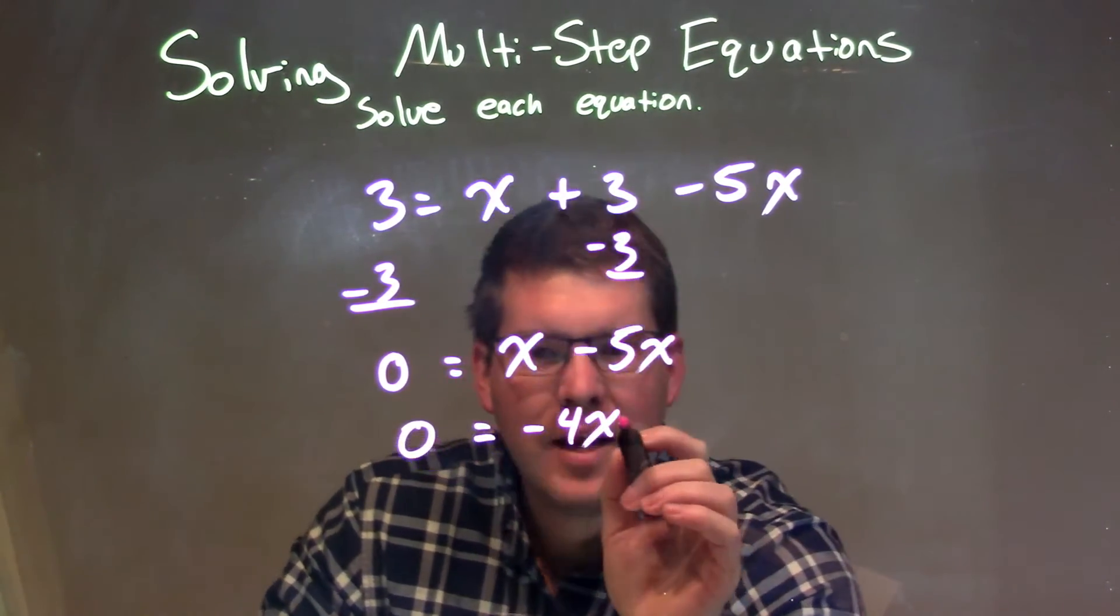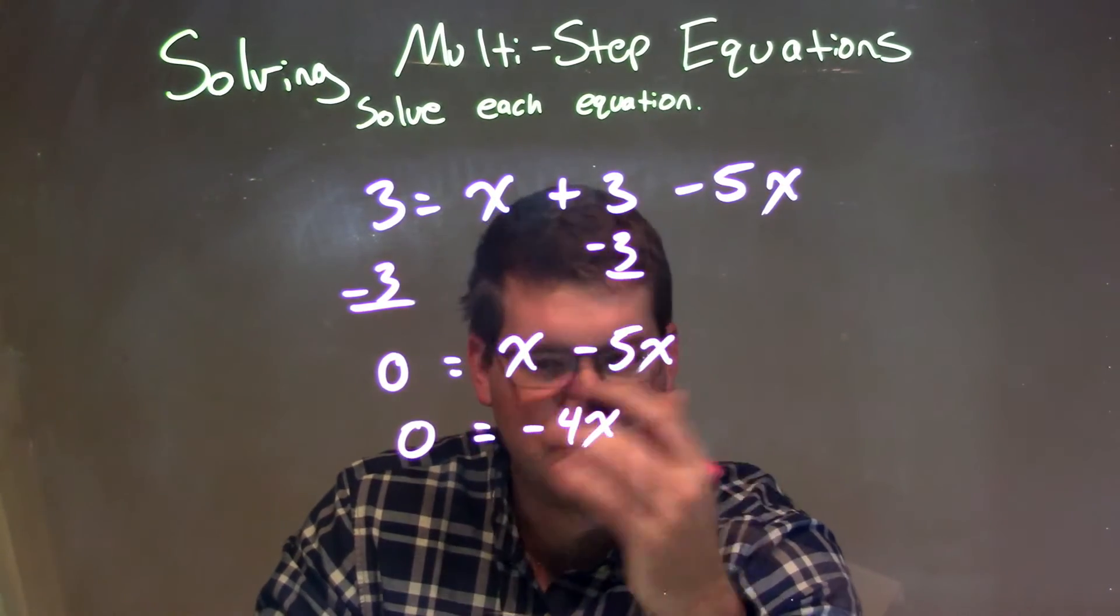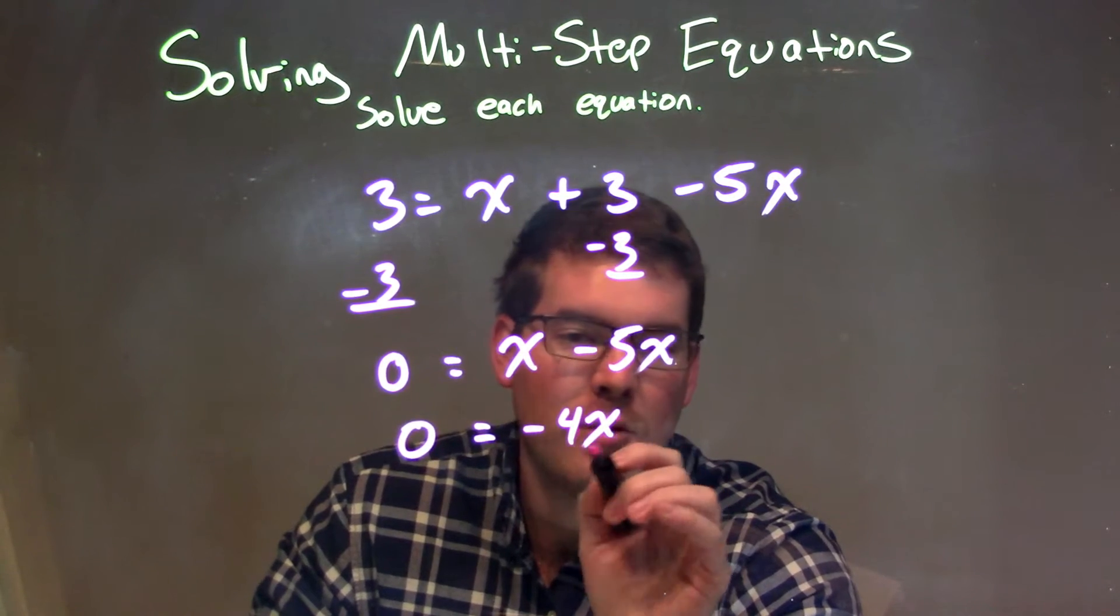So be careful here. A lot of people want to... I don't know what they do. They just say, oh, x just doesn't exist. I don't know why. Multiplication is going on between the negative 4 and the x.